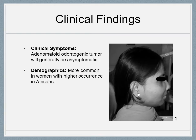Patients with AOT will generally be asymptomatic because the odontogenic epithelium is merely proliferating out of control. A few patients may complain of mild tenderness from palpation due to swelling impinging on nerve endings. AOT is more common in women and is more often located in the anterior arch compared to the posterior arch, and 90% of all cases occur before age 30.